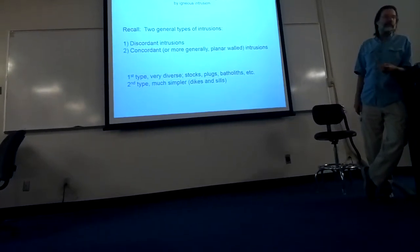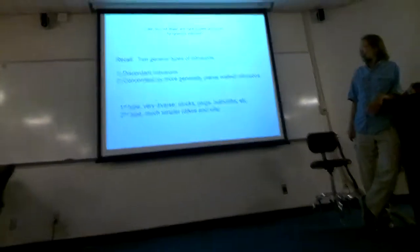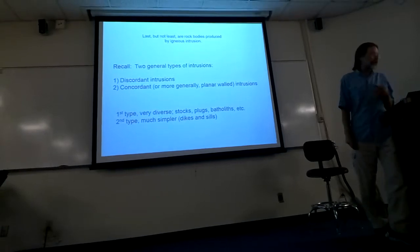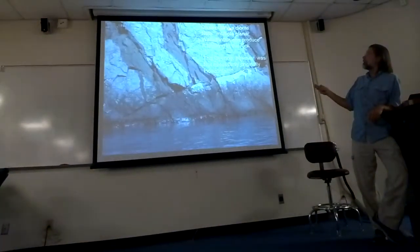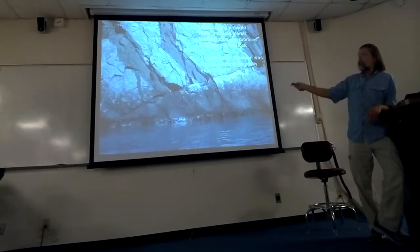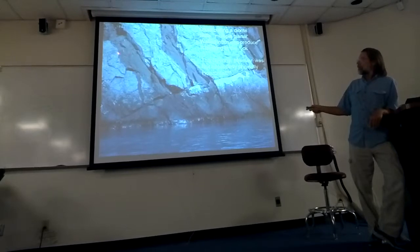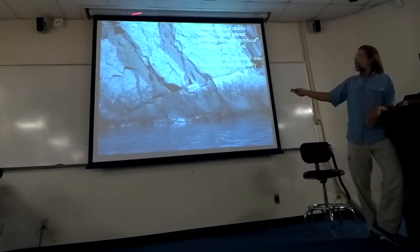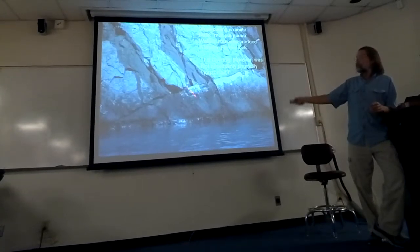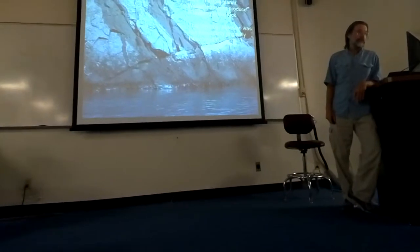The first type includes all those terms you learned in processes or intro — things like stocks, batholiths, all the different terms that apply to large bodies of magmatic rock. The second type are tabular-walled intrusions with two simple names: dikes and sills. Both dikes and sills have the characteristic of a parallel-walled intrusion. When dikes or sills come into another rock, they impart a pseudo-layering to the rock such that the layering can look like something else.